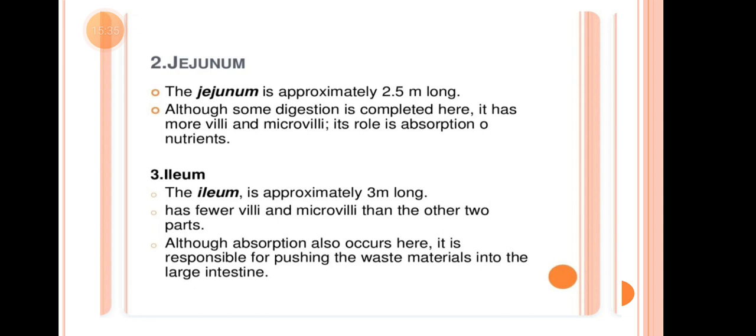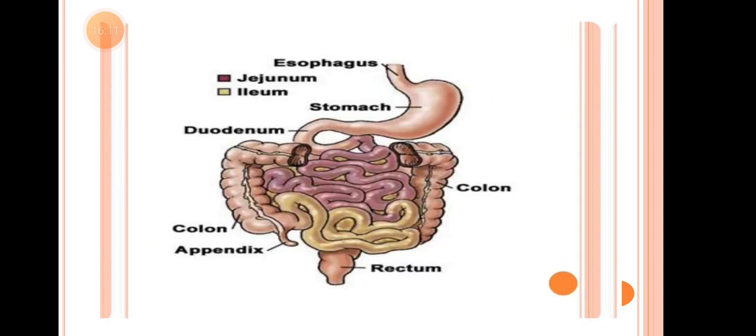The third part is the Ileum, approximately 3 meters long. It has fewer villi and microvilli than the other two parts. Although some absorption still occurs here, its main role is to push the remaining waste materials into the large intestine.